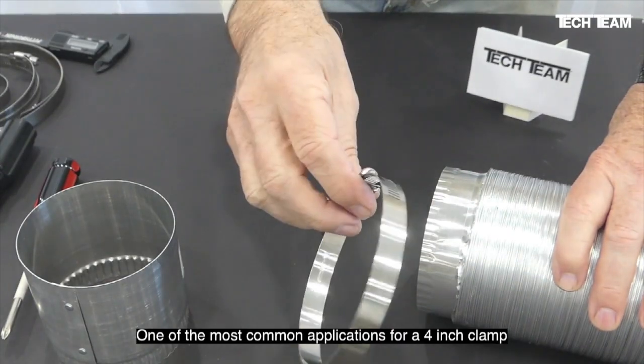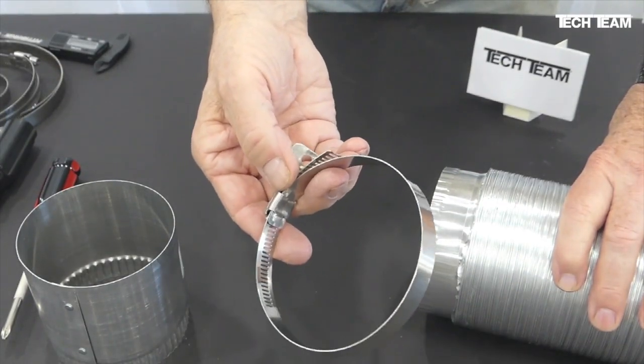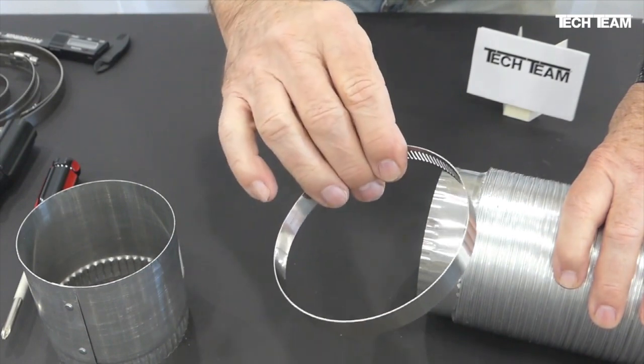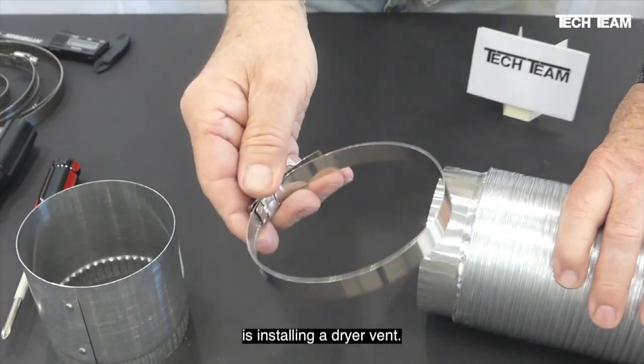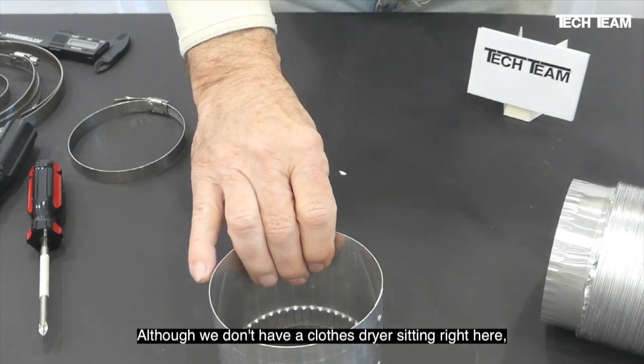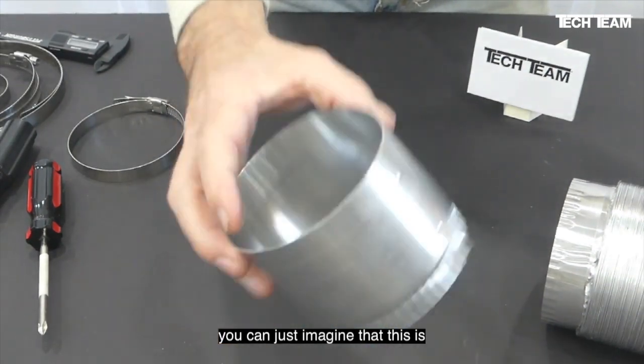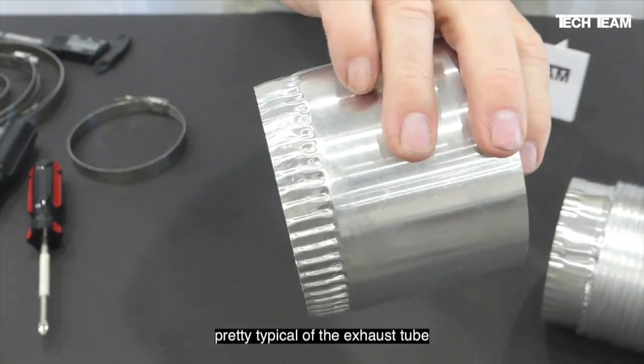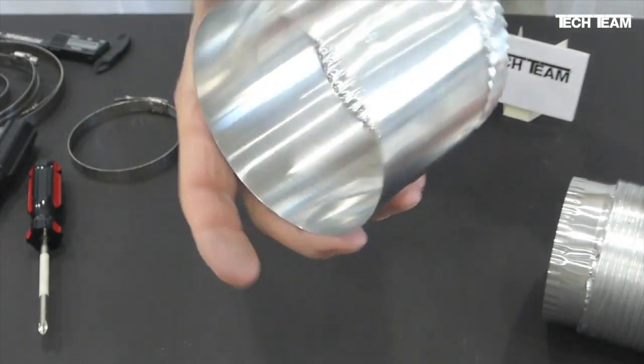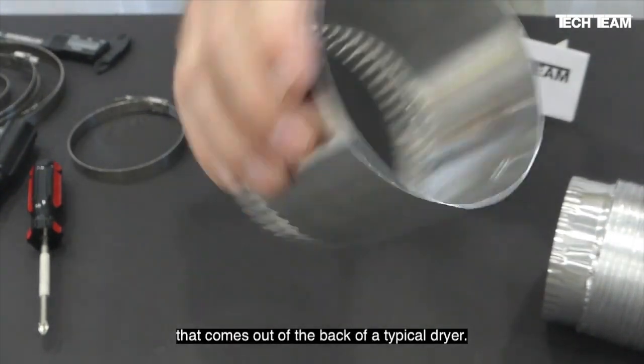One of the most common applications for a 4 inch clamp for a do-it-yourselfer or a homeowner is installing a dryer vent. Although we don't have a clothes dryer sitting right here, you can just imagine that this is pretty typical of the exhaust tube that comes out of the back of a typical dryer.